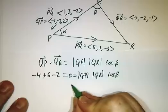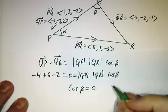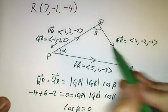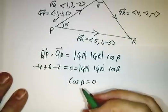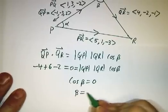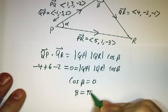So that's the length of QP times the length of QR times the cosine of β. And that means the cosine of β is 0. You see, these vectors are orthogonal. Their dot product is 0, so they're orthogonal. And that means that β is 90 degrees.